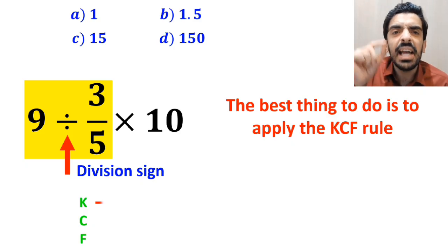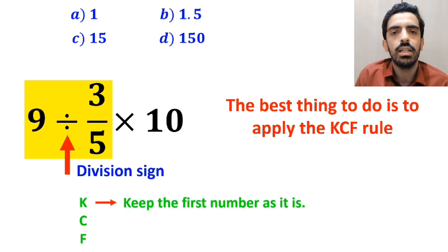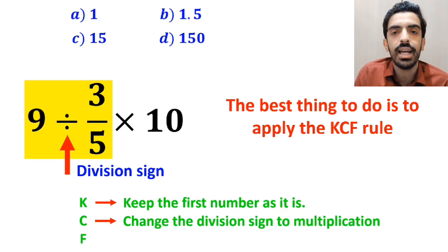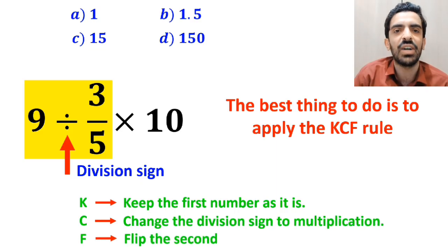In this rule, K stands for keep the first number as it is. C stands for change the division sign to multiplication. And F stands for flip the second fraction.